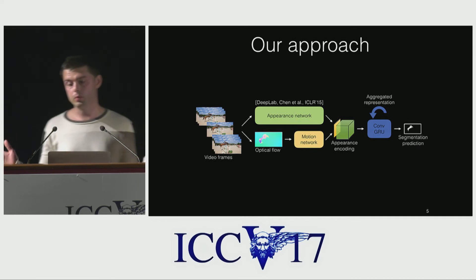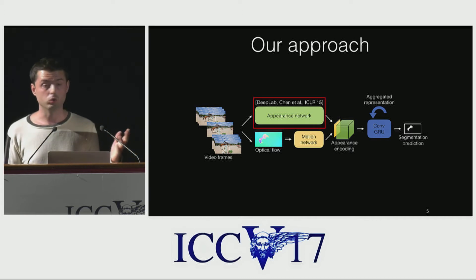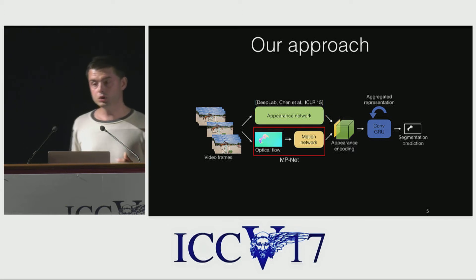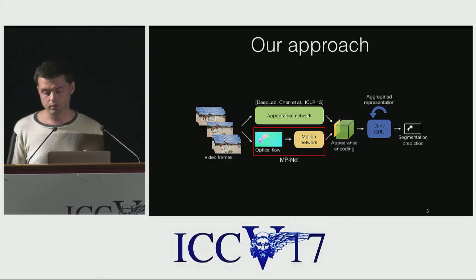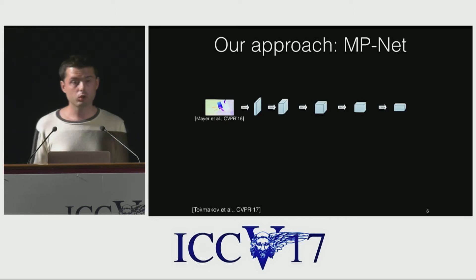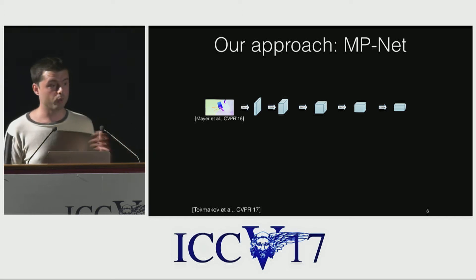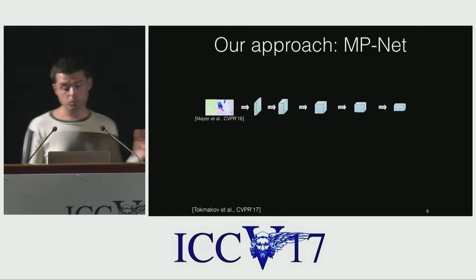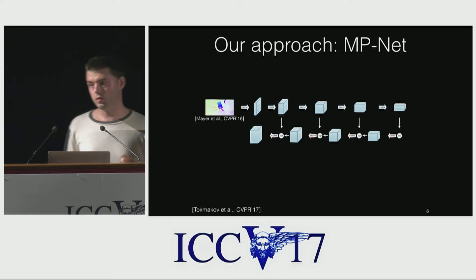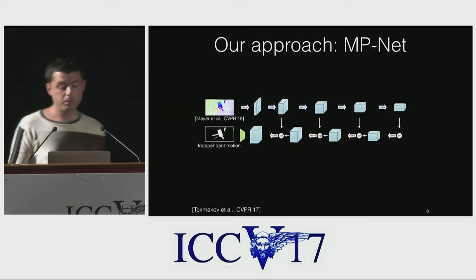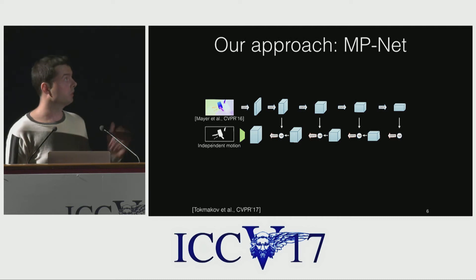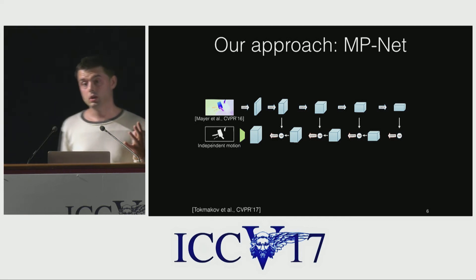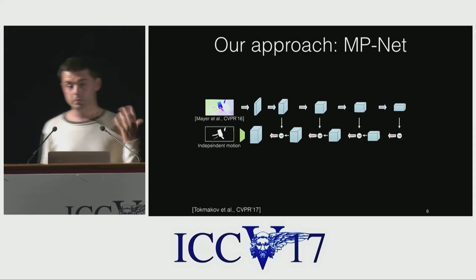Our appearance network is a state-of-the-art segmentation model, DeepLab, trained on Pascal VOC. We extract the FC6 features of this network as our appearance encoding. Our motion network is a model specifically trained to segment independent object motion in the optical flow field. It is trained on a dataset of synthetic videos with available ground truth flow and ground truth moving object annotations, so we can learn it in a fully supervised way. It takes optical flow as input and passes it through two branches — an encoding branch — achieving both a large field of view and high resolution output. The assumption is that independent object motion produces patterns in the flow field which the network learns to capture, much like semantic segmentation models learn to capture patterns in RGB images corresponding to semantic categories.